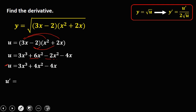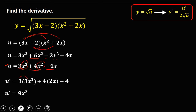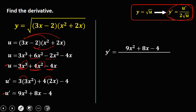Then to get the derivative of u, that's u prime. The derivative of 3x to the power 3: we have 3 times 3x to the power 2. Then the derivative of 4x squared is 4 times 2x. Then the derivative of negative 4x is negative 4. So u prime is 9x squared plus 8x minus 4. Then substitute these values to the formula. So y prime is equal to u prime, that's 9x squared plus 8x minus 4, over 2 times the square root of u, which is square root of 3x to the power 3 plus 4x squared minus 4x. So this is now the derivative.